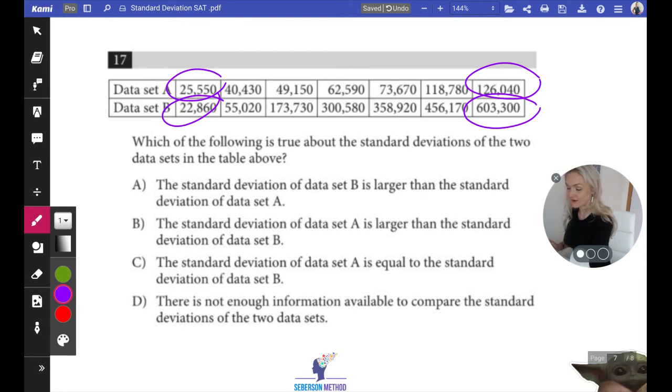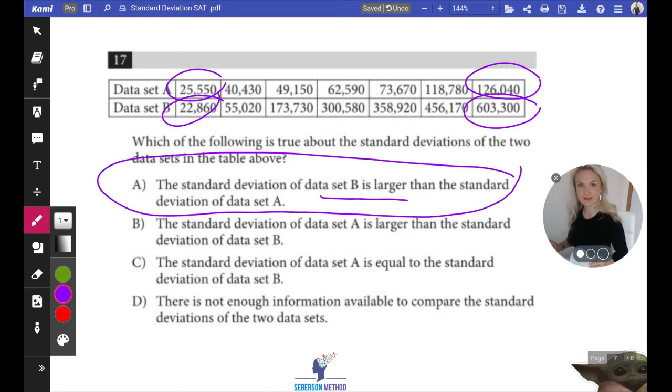So the right answer is going to be: the standard deviation of set B is larger than the standard deviation of set A. Answer choice A is correct. More spread out equals high standard deviation, less spread out equals low standard deviation.